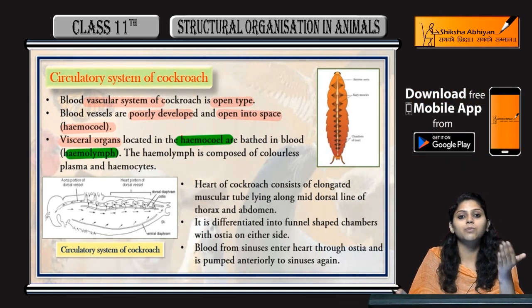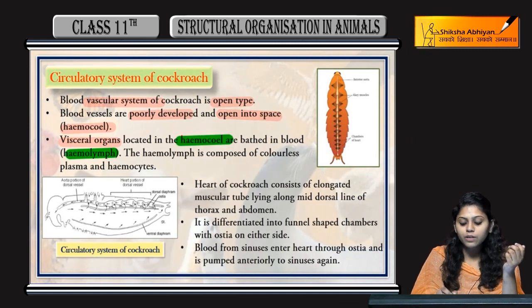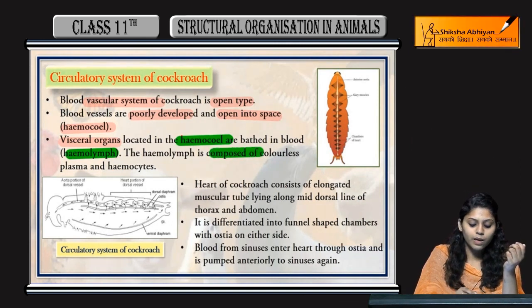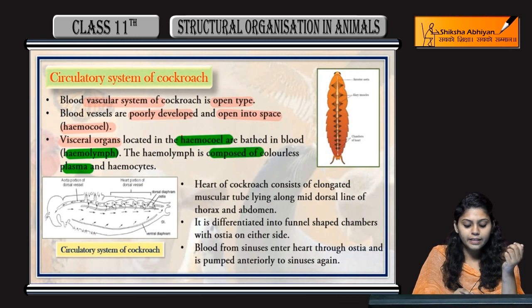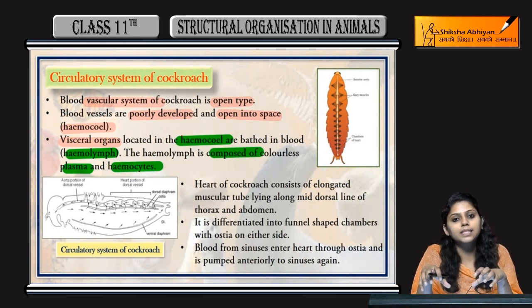The organs bathe in the blood, or you can say hemolymph of the cockroaches. Hemolymph is composed of colorless plasma and hemocytes — plasma hai and blood cells hai.